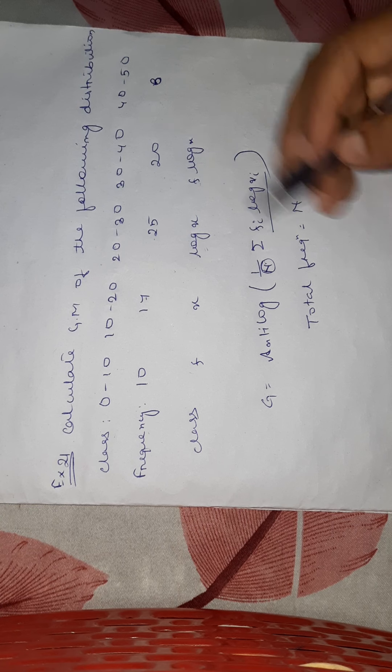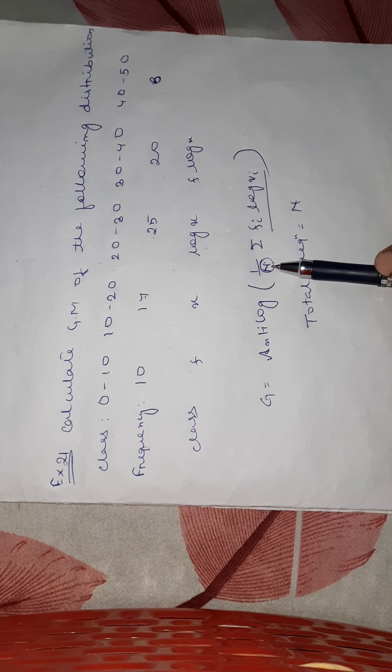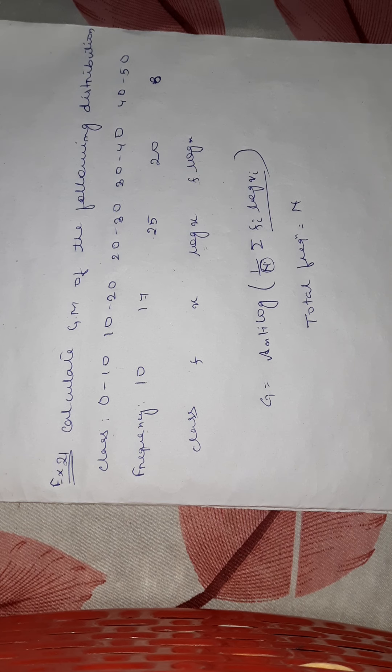So sum up those values, divide it by n. And the value which you will get, after dividing by n, you have to find the antilog of that value. So the antilog of that value will be your geometric mean.